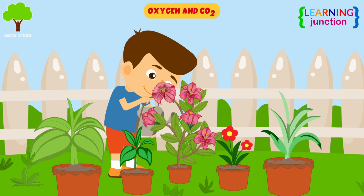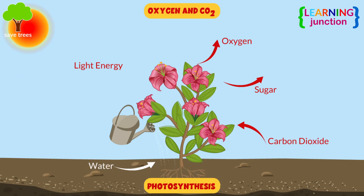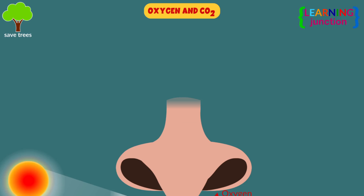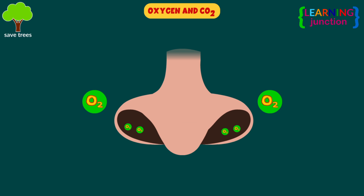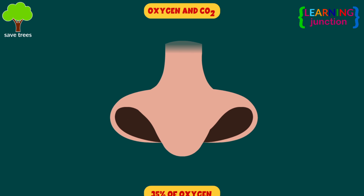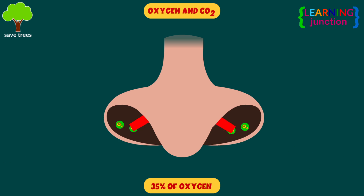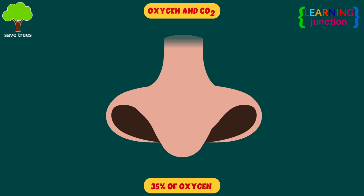Oxygen and CO2. Through the process of photosynthesis, trees remove CO2 from the atmosphere and convert it to oxygen. Trees are responsible for 35% of the oxygen humans breathe in.